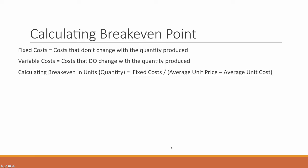Another thing to consider when pricing your product is how many units you will have to sell to break even. To calculate our break-even point we need to differentiate between fixed costs and variable costs.